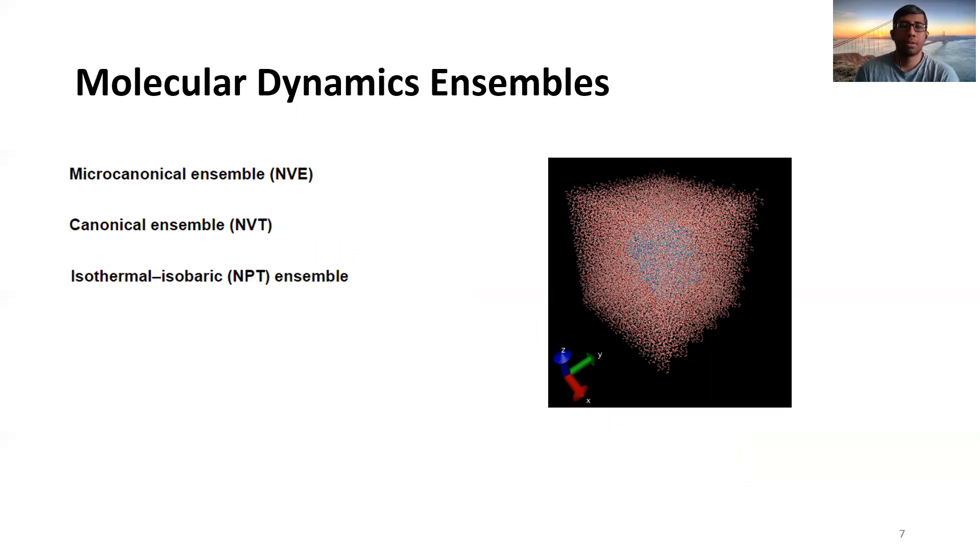There are generally three types. One is called microcanonical ensemble or NVE in which N, V and E of the system, that is the number of atoms, the volume of the system and the total energy of the system is kept constant. Another one is a canonical ensemble where the N, V and the temperature of the system is kept constant. And the third one is isothermal isobaric ensemble where number of atoms, pressure and temperature are kept constant.